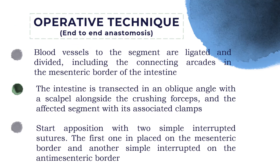For the operative technique, the first procedure was end-to-end anastomosis. Blood vessels to the segment are ligated and divided, including the connecting arcades in the mesenteric border of the intestine. The intestine is transected at an oblique angle with the scalpel alongside crushing forceps, and the affected segment with its associated clamps is removed. The clamps are used to minimize bleeding.